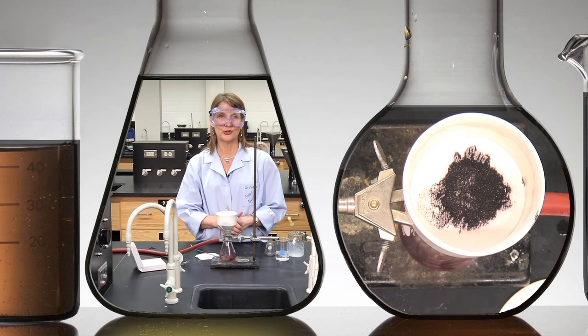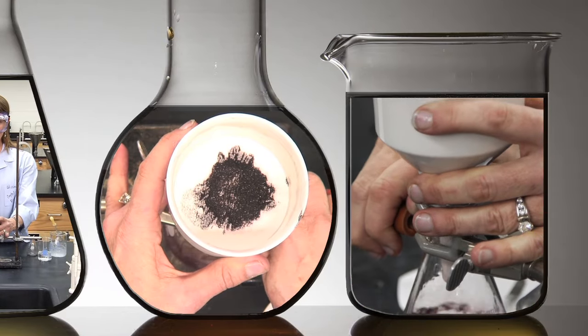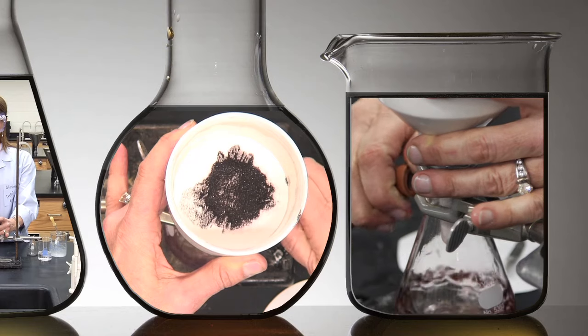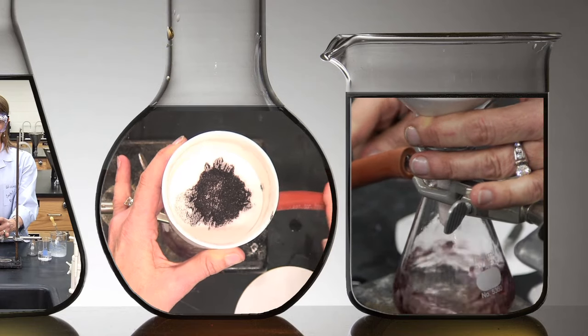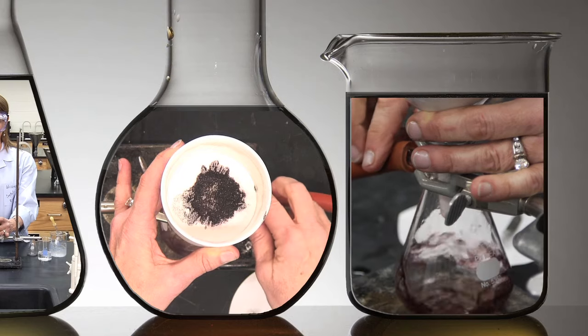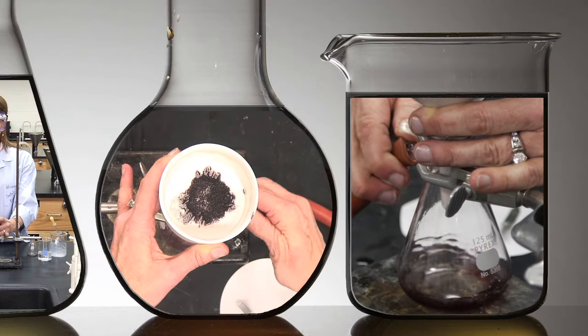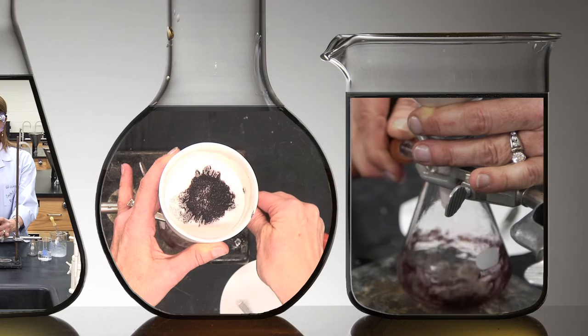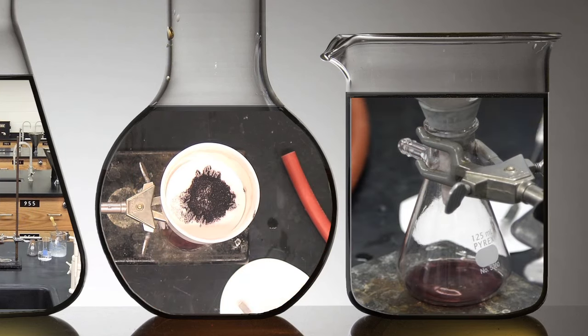After the crystals are dry, you want to release the pressure and to do this, you slowly pull the vacuum tube. Again, notice we're using thick wall tubing here, not the thin wall tubing, and release the pressure and turn off the vacuum.